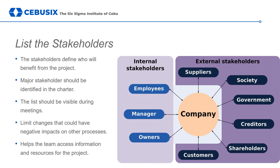Listing major stakeholders on the charter helps the team remember who and what they are likely to impact in addition to end customers. Having the list visible during meetings reduces the chances that the team will initiate changes that might have a negative or unwanted effect on other process owners or processes. And it helps to direct the team to resources outside of the team that can provide help, access, or information to areas related to the project.